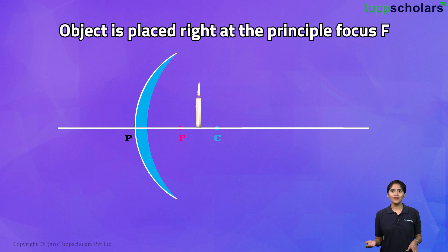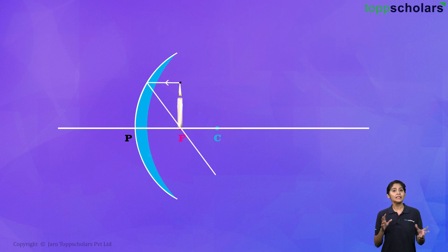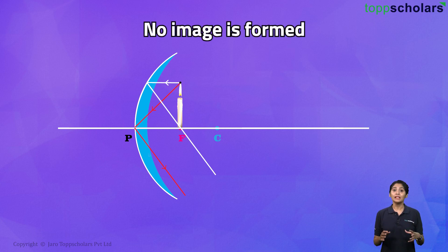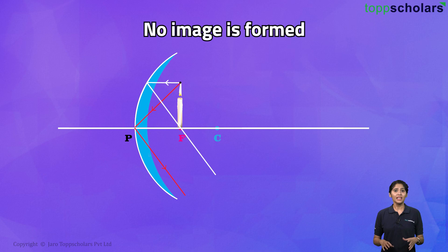Eventually, we can bring our object right at the principal focus. And now you will see that the two rays become exactly parallel to each other. And as a result, they will never meet each other, which means you will never see an image. Even at infinity, no image is formed.